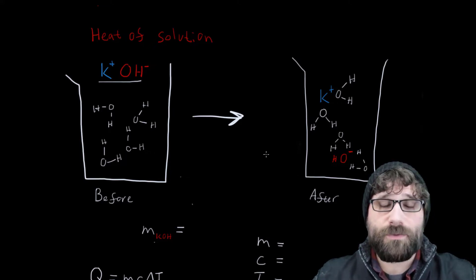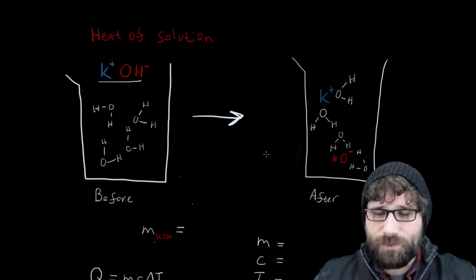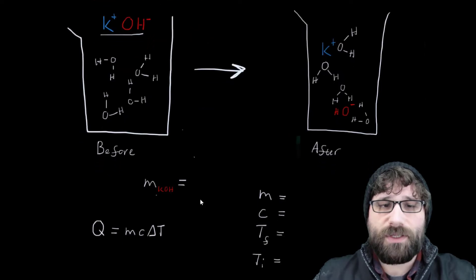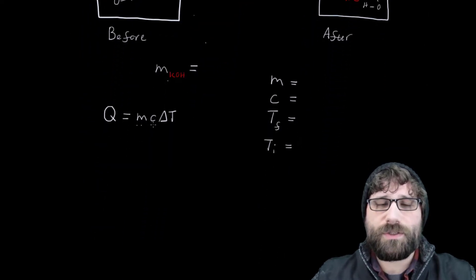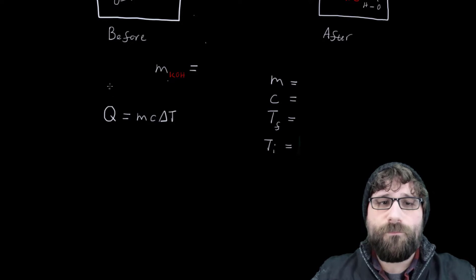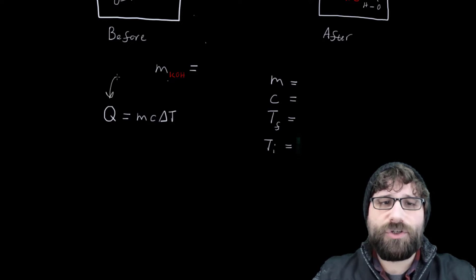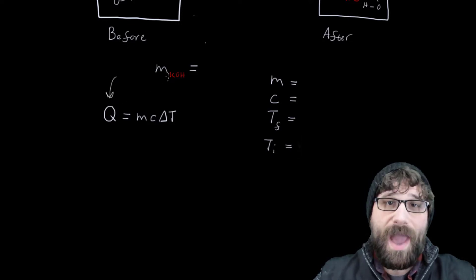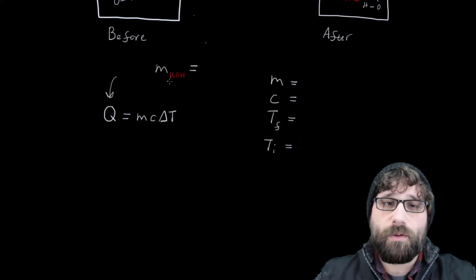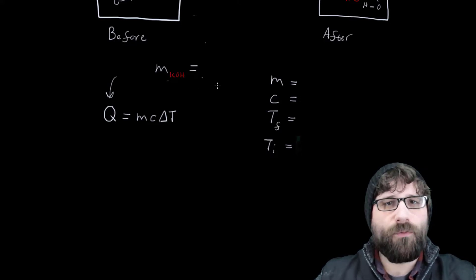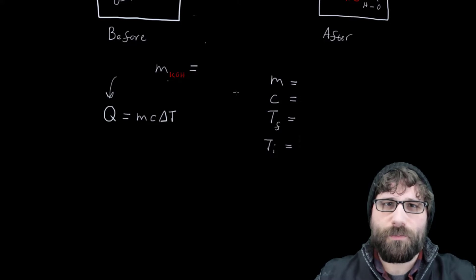We're able to measure that using a thermometer and then we're able to plug those numbers into our mc delta t equation. So we're just going to plug in our variables, figure out what was the energy change in that water when we added that solute. And then we're able to figure out energy per gram for that solute.